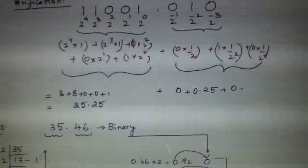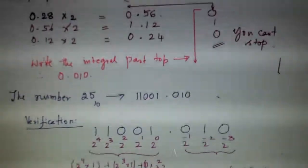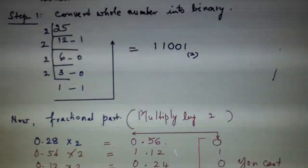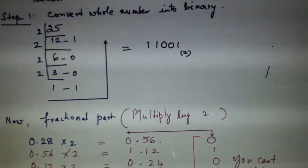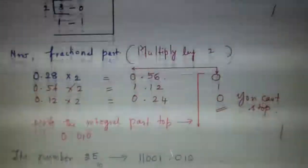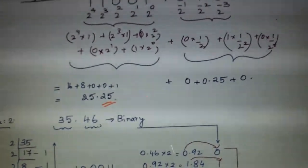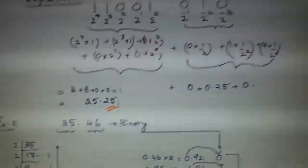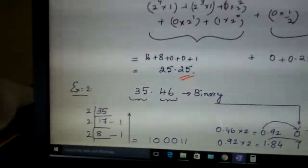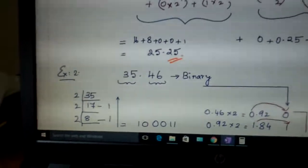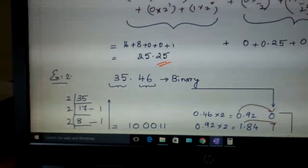So actually the number given to you was 25.28. You got only up to 0.25 here. So if you take one more digit, maybe you will get one more value. So that is how it is.